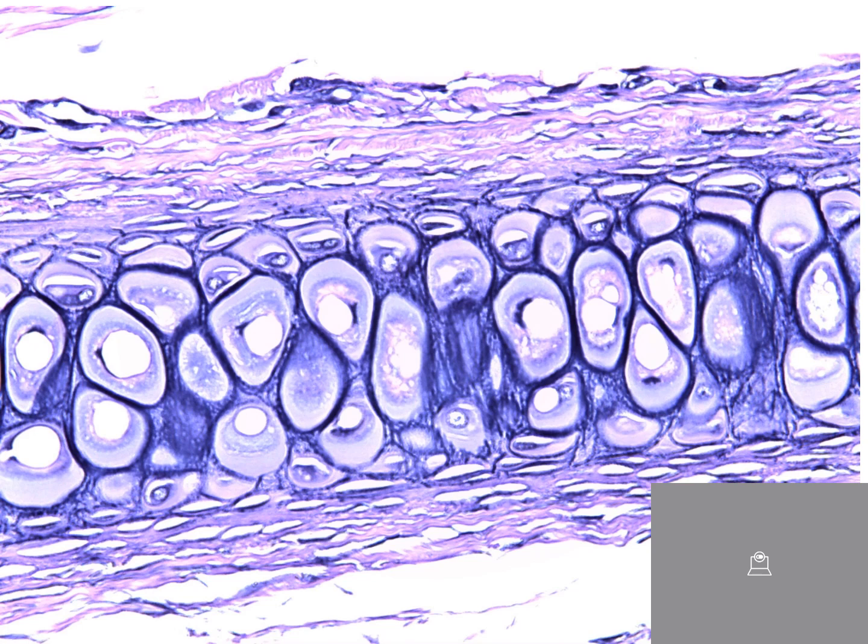Here you have elastic cartilage, a different type of cartilage cell. You can see the chondrocyte here. Some folks think it looks like corn. I don't know about that. But elastic cartilage.